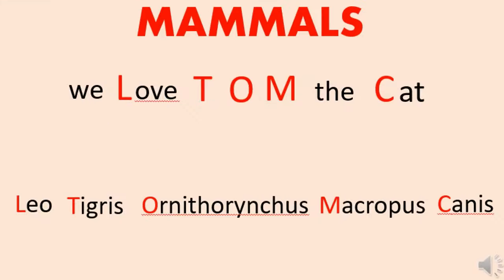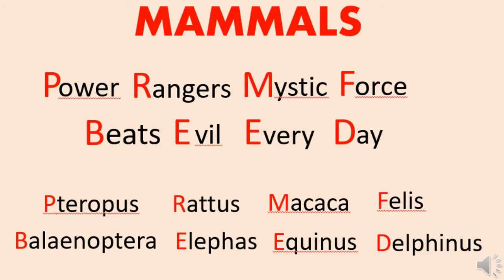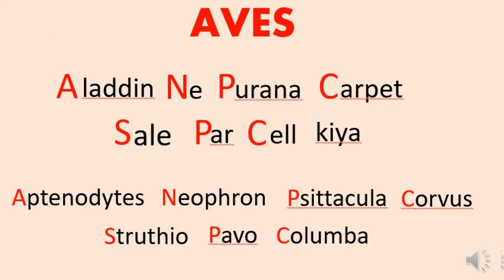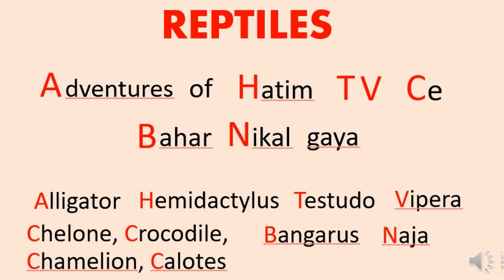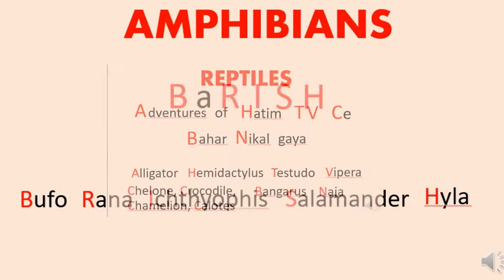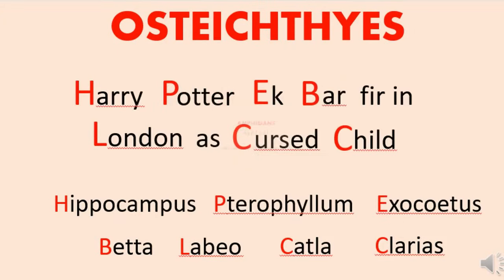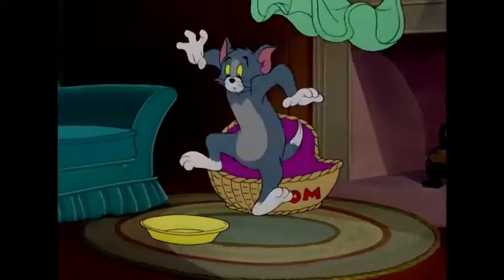So those were all the examples of Chordata. This video was a continuation of my last video on tricks for animal kingdom. I hope you guys have watched that video, because through mnemonics all the examples of animal kingdom are covered. If you haven't watched it, click the i button on the upper right corner and you can go watch that video.